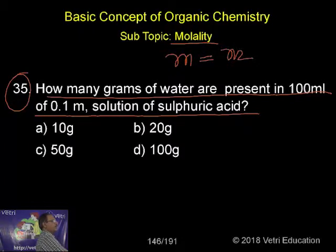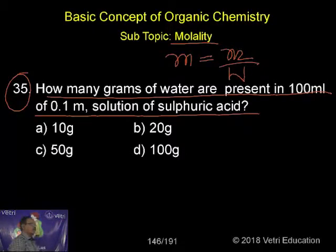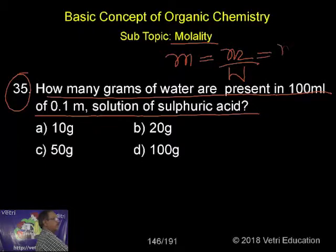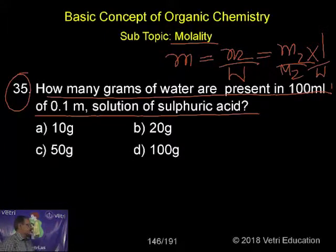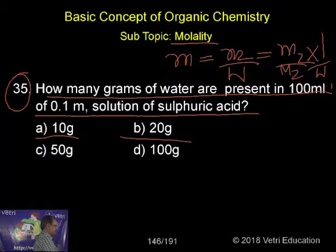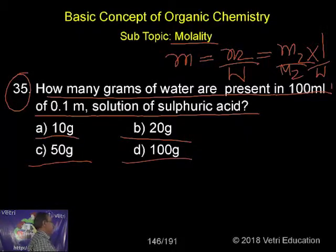The definition for molality is: m = n₂ / w₁, which equals m₂ / (M₂ × w₁). That is the formula. The answer options are: a) 10 grams, b) 20 grams, c) 50 grams, and d) 100 grams.